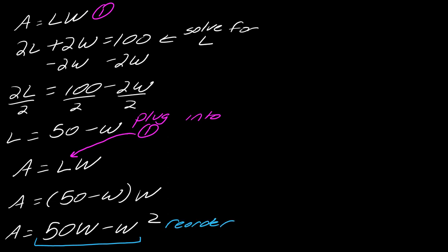So I'm going to continue over here. I'm actually going to erase this so I have a little more space. So my A, if I just reorder it, this will be negative W squared plus 50W. Okay, so this is quadratic, at least on this side. It's got the square term.